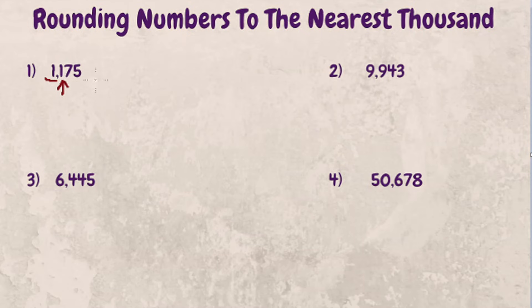Well, four or less means you round down, so one thousand one hundred seventy-five rounds to one thousand.